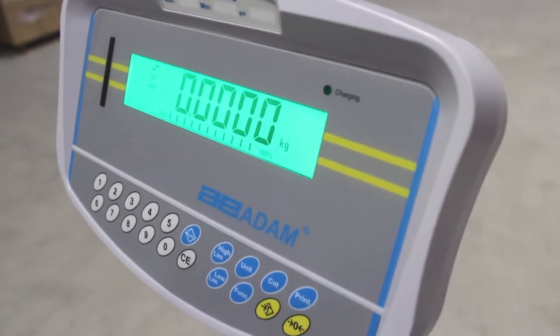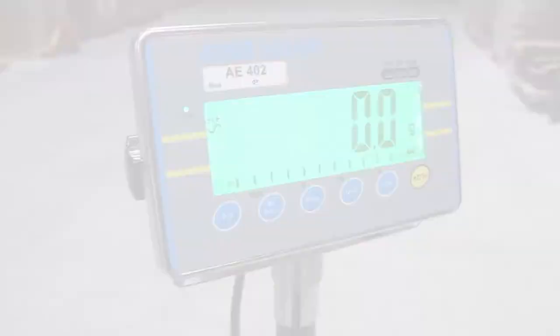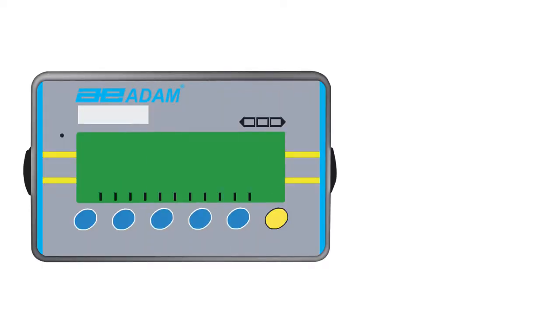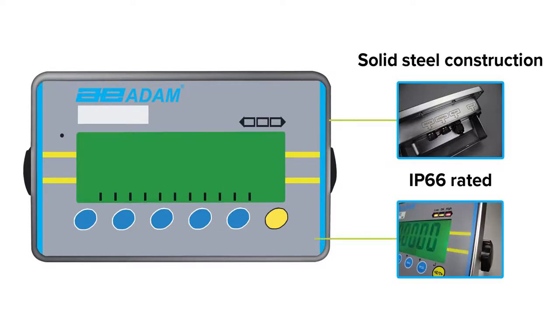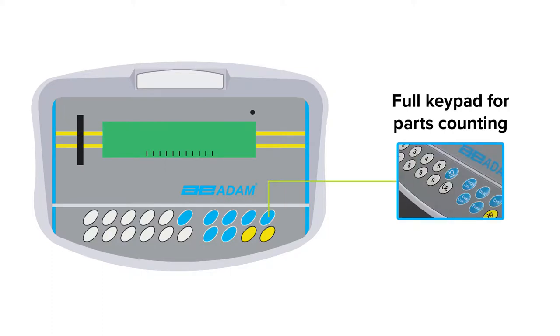Including Adam Equipment's GK or AE402 indicators. The AE402 indicator is constructed of stainless steel and is sealed for use in dusty or wet environments. The GK indicator offers a full keypad for entering preset pairs or samples for parts counting.